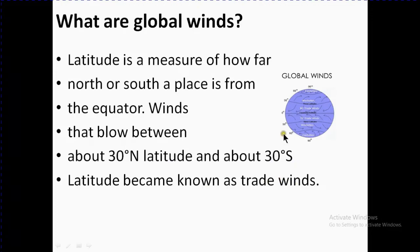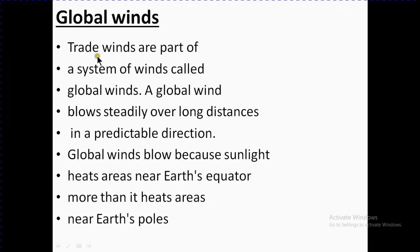Winds that blow between about 30 degree N latitude and about 30 degree S latitude became known as trade winds. Trade winds are part of a system of winds called global winds.